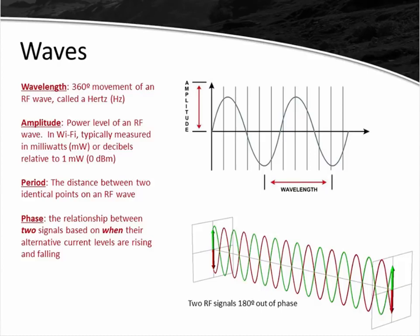Out-of-phase waves arrive at a receiver due to RF behaviors like reflection, causing multiple copies of the signal at slightly different times. This is an important thing to consider, and it's one thing we actually take advantage of in modern wireless LANs. With 802.11n and 802.11ac using MIMO — multiple input multiple output — we're actually taking advantage of these phase variations to transmit multiple spatial streams.